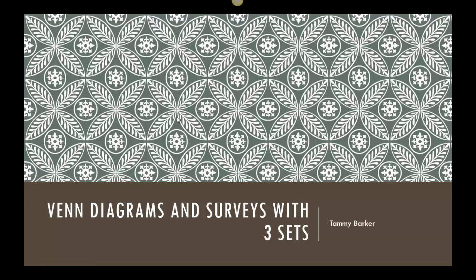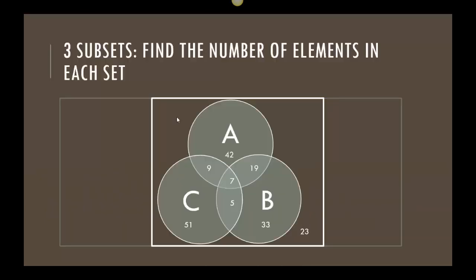This video is going to look at Venn diagrams some more, and we're going to look at surveys with three sets. To start us off, I thought we'd just look at some three subsets to make sure we remember how to do cardinality and we're thinking about what happens as we add more and more numbers.